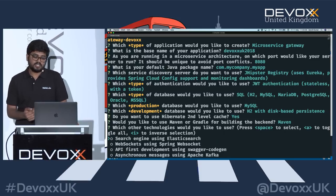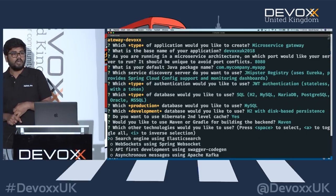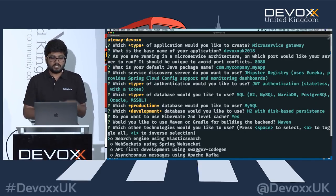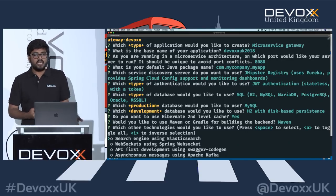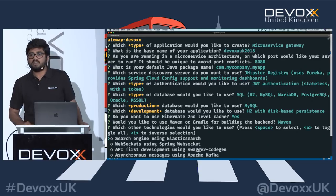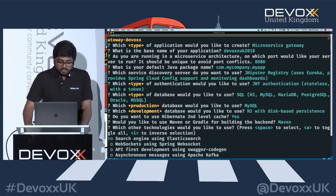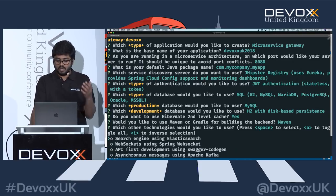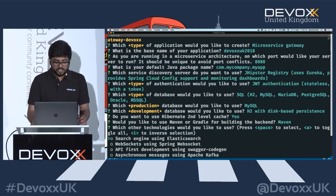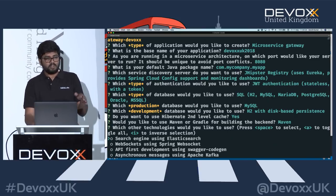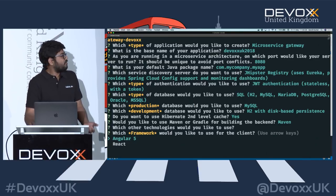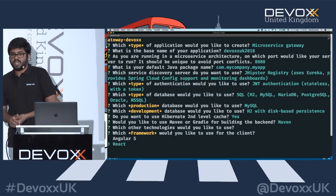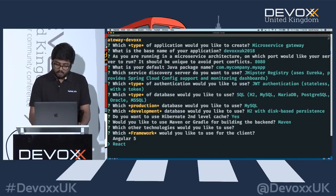There are additional technology options: you can add Elasticsearch, Spring WebSocket, API-first development with Swagger CodeGen, and Kafka support. For the frontend framework, we live on the bleeding edge — let's go ahead and select React, which is in beta. We also have Angular 5, and Angular 6 pull request is open — we're on the verge of merging it. You'll likely have Angular 6 in a few days.